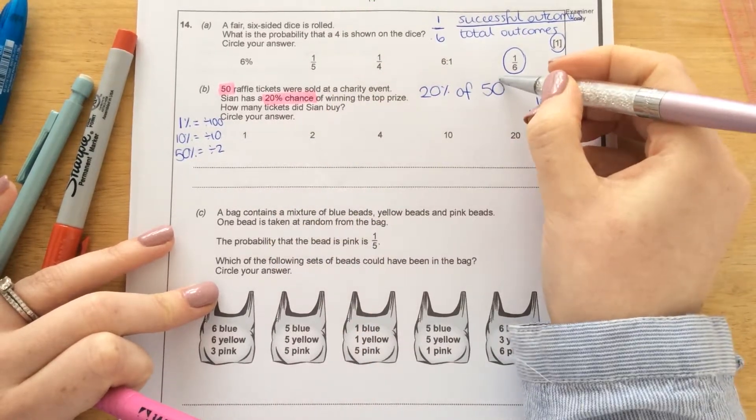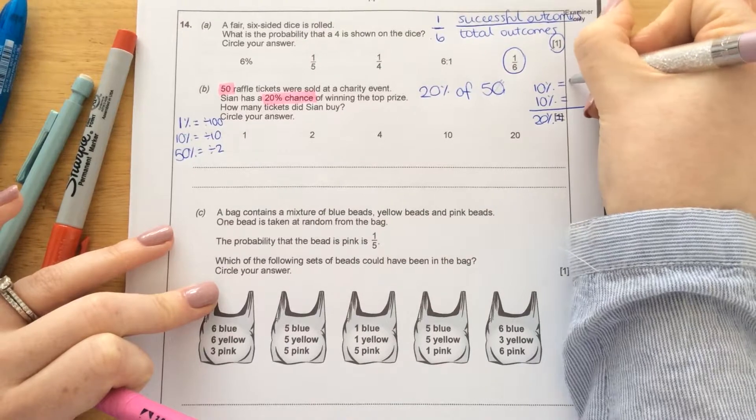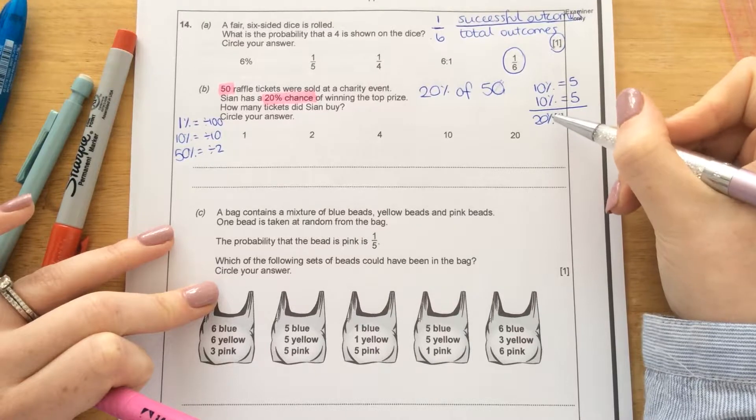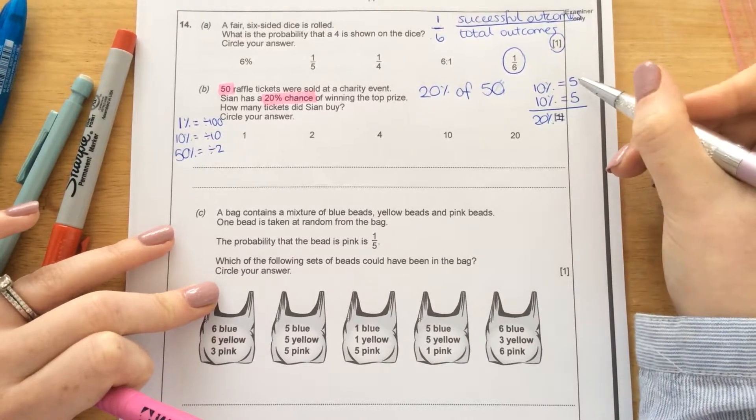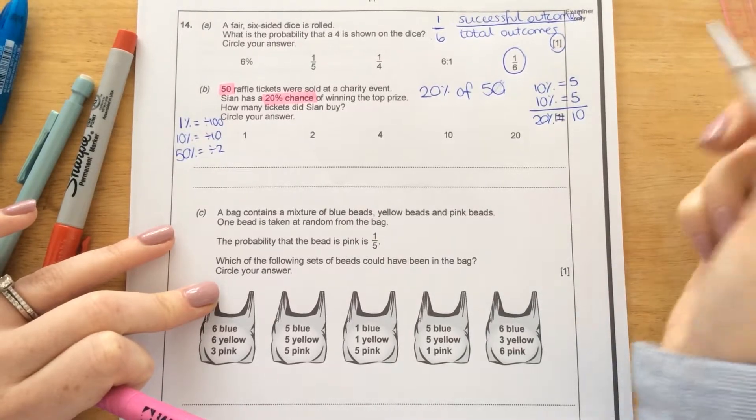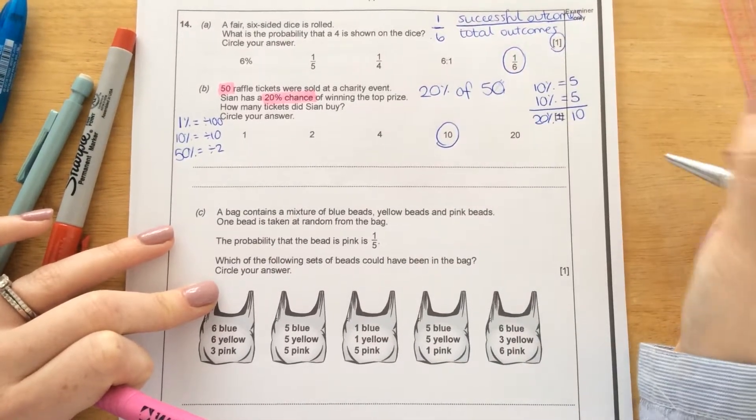And to divide the number by 10, this has 1, 0. That has 1, 0. So just get rid of it. So 10% would be 5. And 10% again is 5. So if I add 10% and 10% together, that gives me 20%. So if I add the 5 and the 5 together, that will give me 10 tickets. And that's one of my options here. And that's one mark.